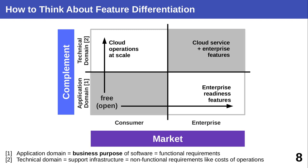One way to think about feature differentiation uses two dimensions: consumer or enterprise market, and application domain versus technical domain. Consumers are usually not a good target for commercial open source, but they might do marketing for you. An example is MySQL: consumers need it for things like running a WordPress blog, so that application functionality must be free and consumers are unlikely to ever pay for it.